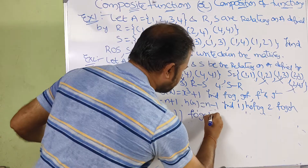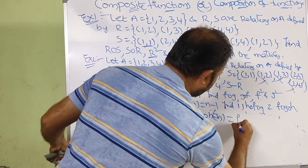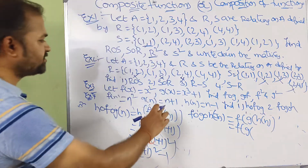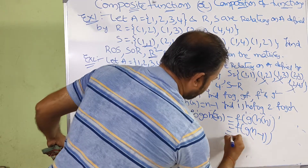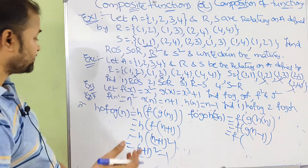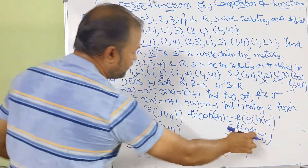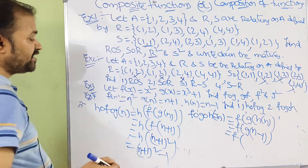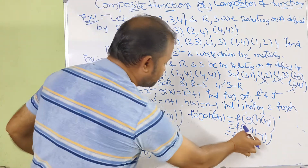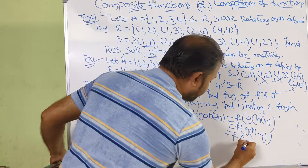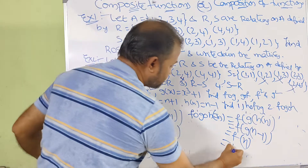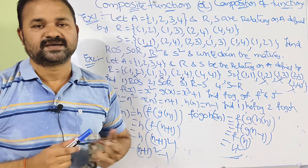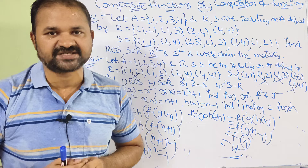Finally compute f∘g∘h(n) = f(g(h(n))). First h(n) = n−1. Then g(n−1): since g(n) = n+1, substitute n−1 giving (n−1)+1 = n. Then f(n) = n². So f∘g∘h(n) = n². In this way we can solve any composition problem very easily. Please like the video, subscribe to the channel, and share with your friends. Thanks for watching.